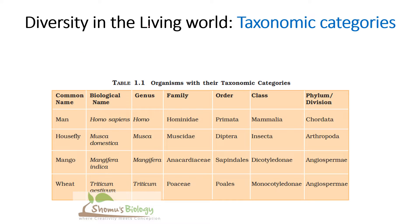The first thing I want to talk about is the taxonomic categories. There are different taxonomic categories and you need to remember them in sequence, in a proper order. Particularly, if you recall table 1.1 — organisms with the taxonomic categories for man, housefly, mango and wheat — how can we remember that?